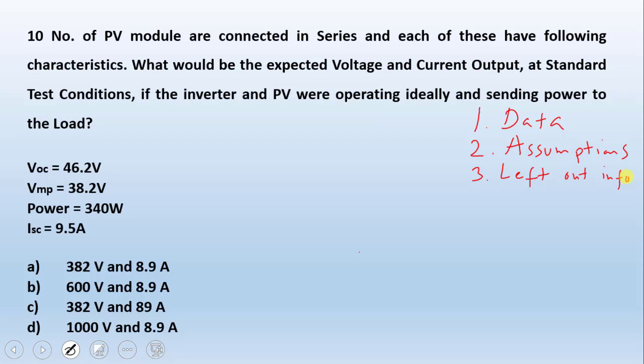Now let us see what is given in this question. In this question we have ten number of PV modules which are connected in series. So ten number of PV modules connected in series are making a system.